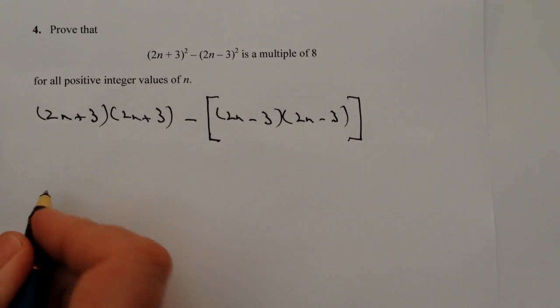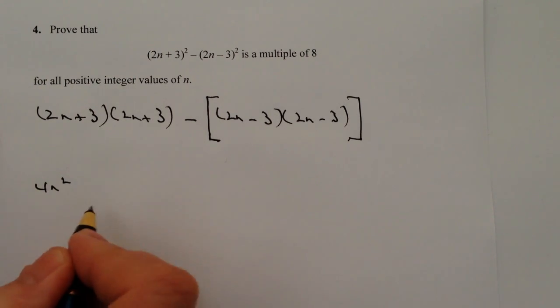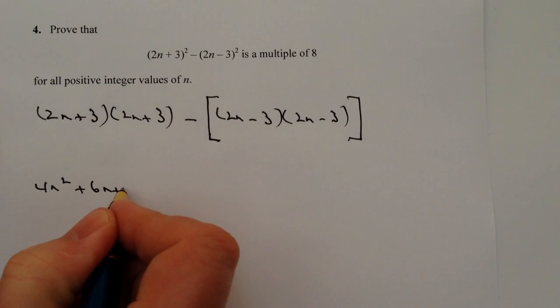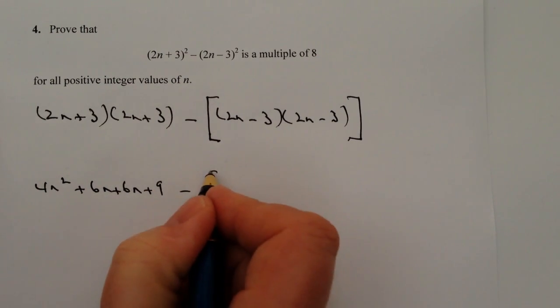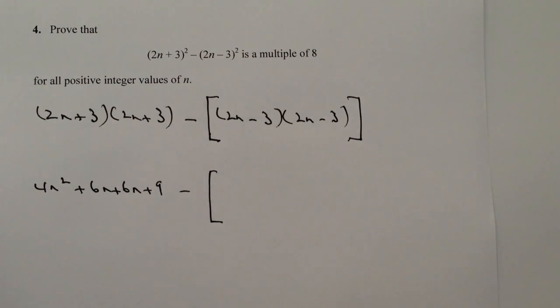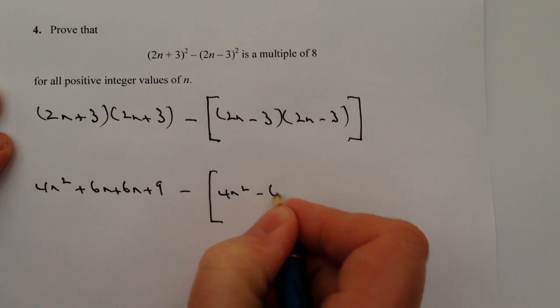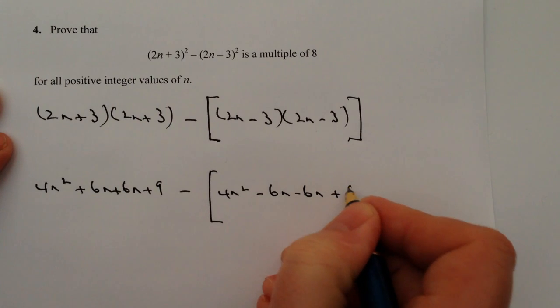So the first side here is fine. I can do that. That's going to be 4n squared, and that's going to be plus 6n plus 6n plus 9. And then I've got minus, and again, I'm going to put a big square bracket just makes it a bit easier for me. And I've got 4n squared minus 6n minus 6n plus 9.